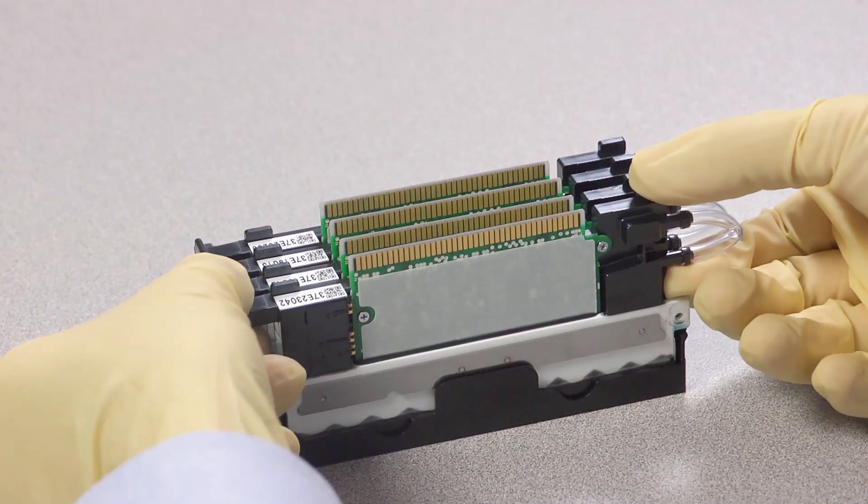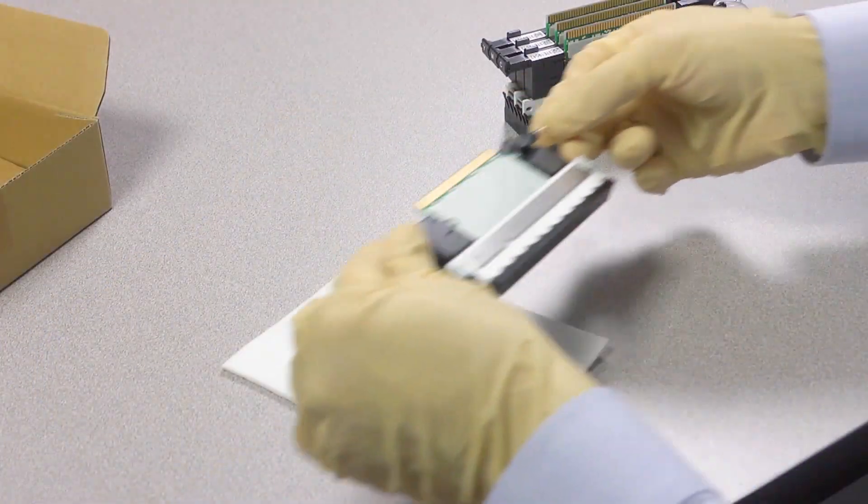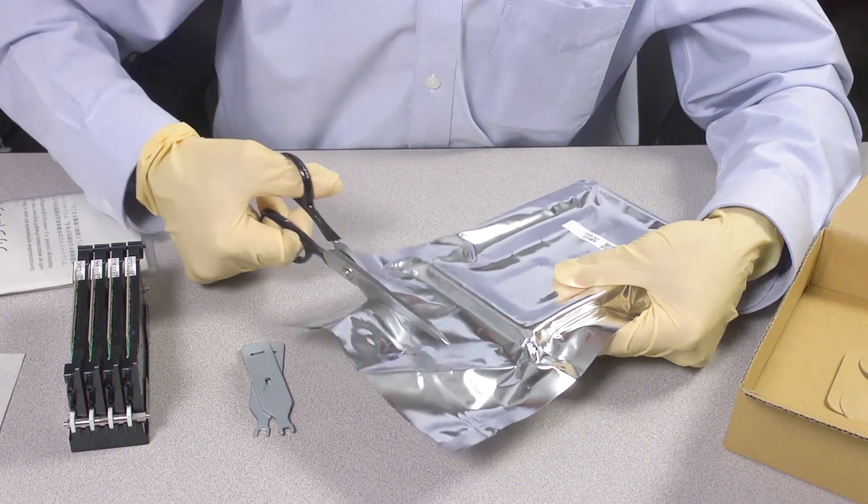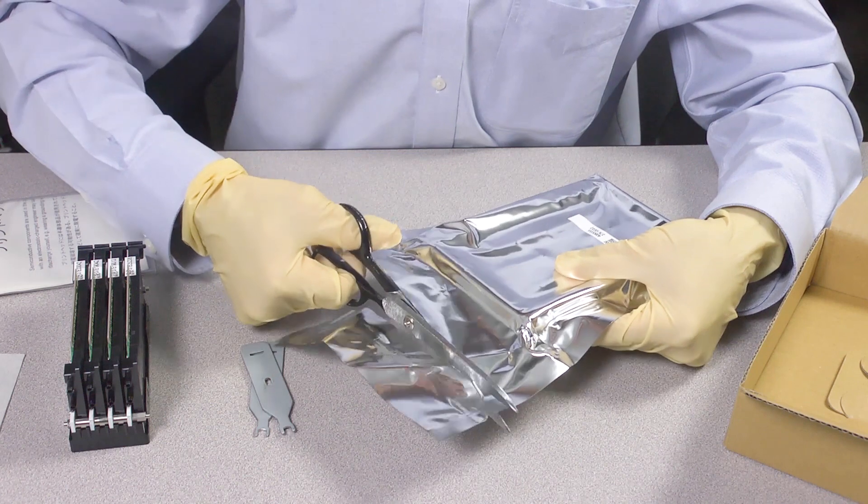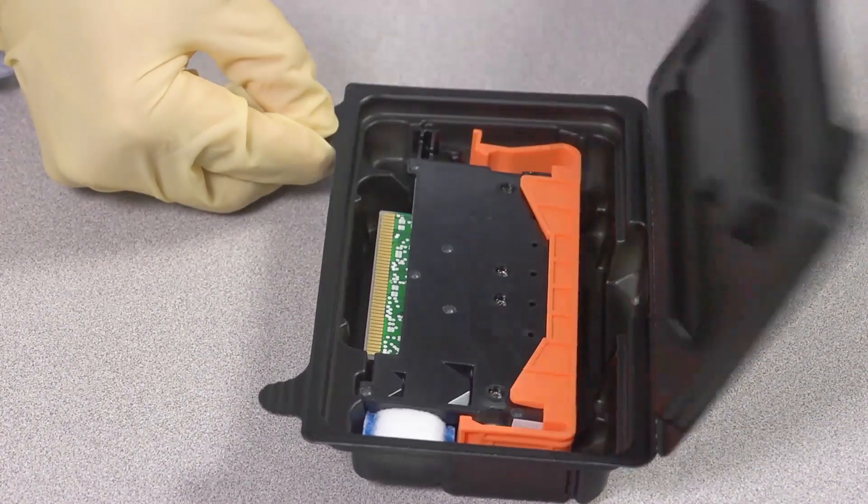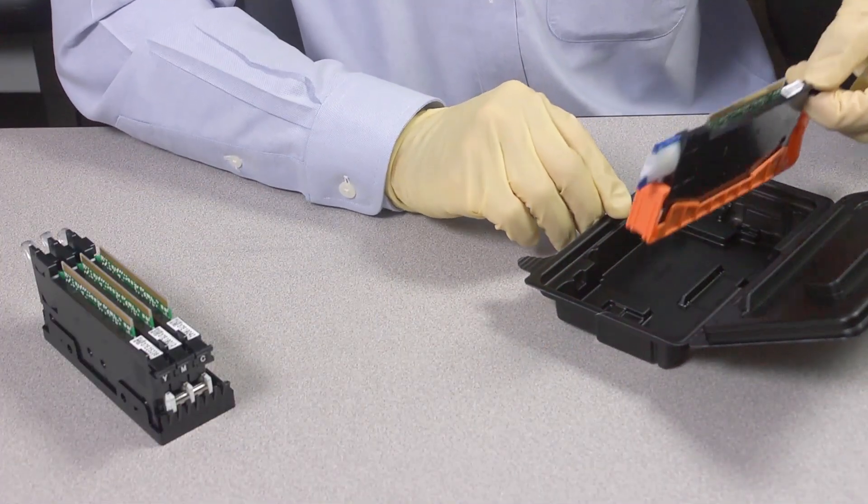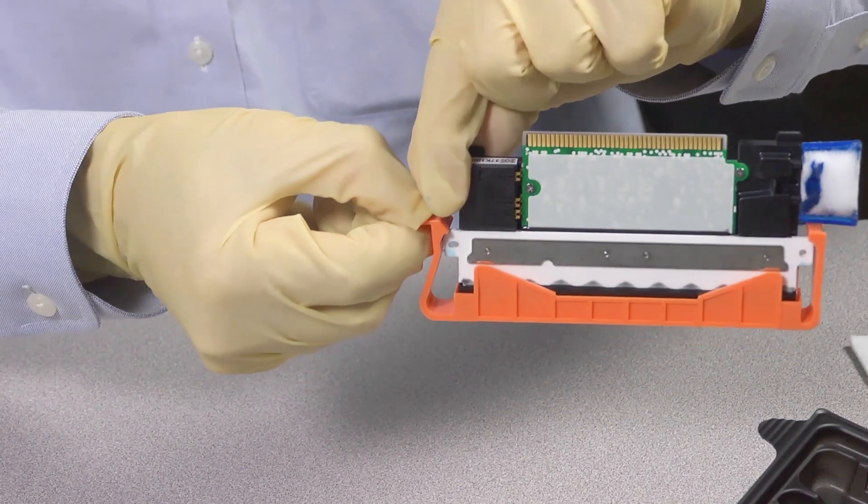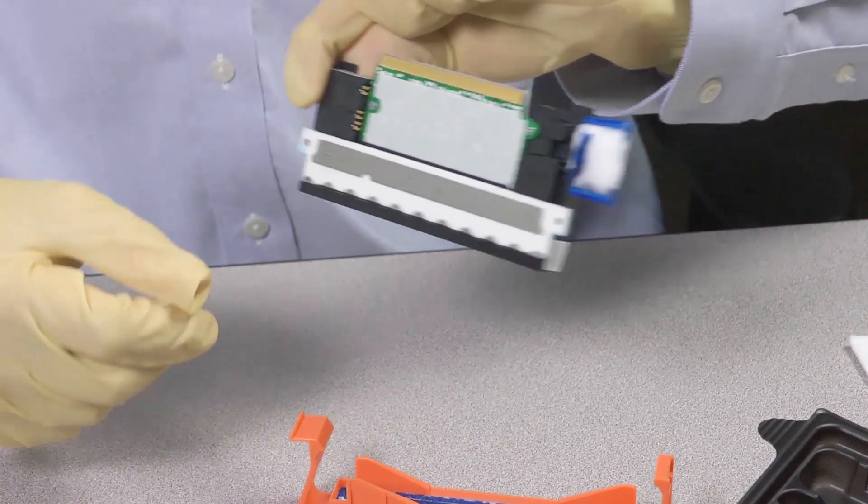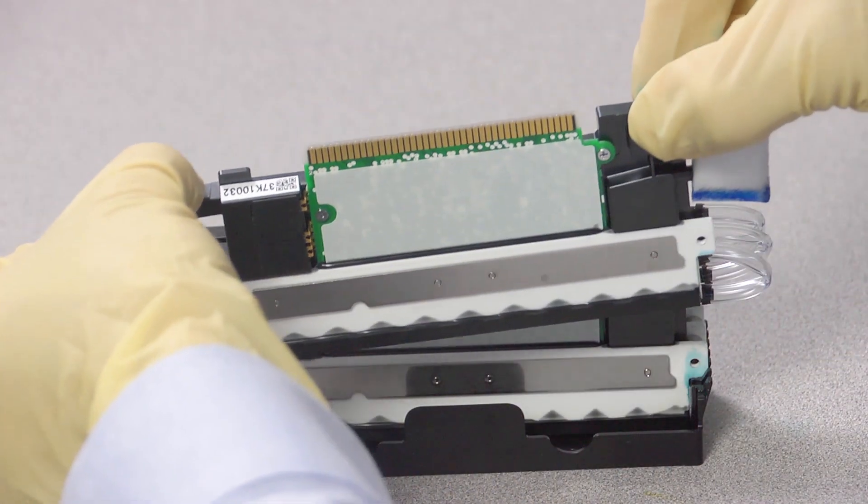Lift and remove the individual color print head that needs to be replaced and place it on a covered surface to avoid stains from leakage. Note that you should always hold the print head from the plastic handle. Using the rubber gloves, remove the new print head from its packaging. Unclip the orange casing. Slowly insert the new print head into place.